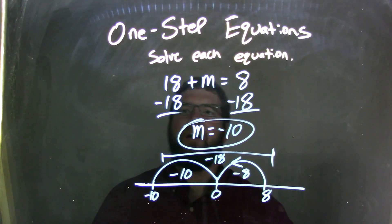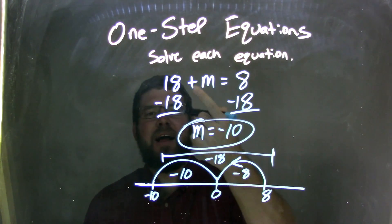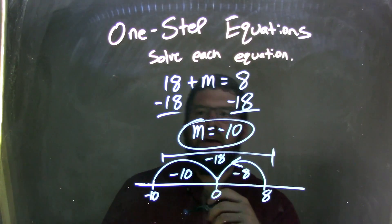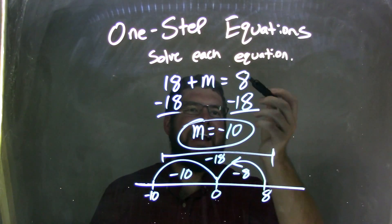So let's recap. We have 18 plus m equals 8. I see there's a positive 18 here, and to get rid of that I have to subtract an 18. So I subtract 18 from both sides. The 18s on the left cancel, I'm left with just m on the left. On the right, I had 8 minus 18.